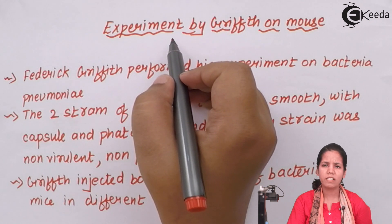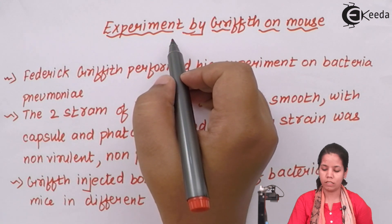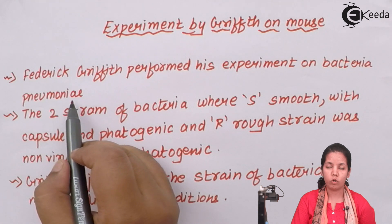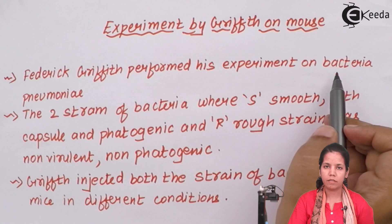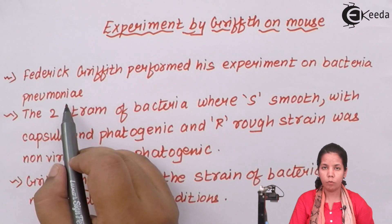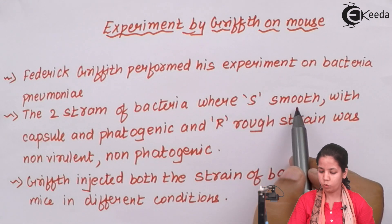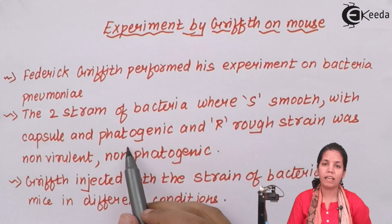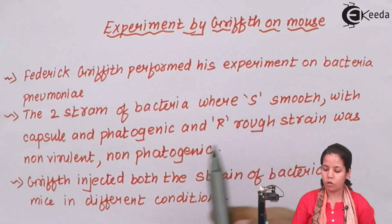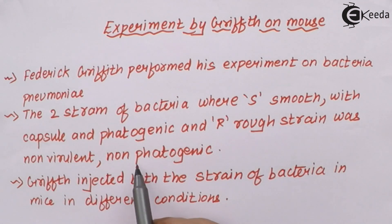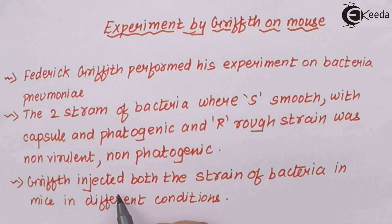Griffith wanted to find out what was the genetic material — what was that thing actually ruling the cells. For this, Frederick Griffith did an experiment which included different sets of mice and a bacterial species called Diplococcus pneumoniae. He took two different types: the S strain, which was smooth, capsulated and pathogenic, and the rough strain which was non-virulent and non-pathogenic. Frederick Griffith injected these two strains in the mouse samples in different conditions — in live form as well as in dead form by heat killing them.